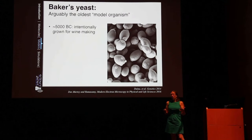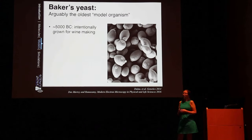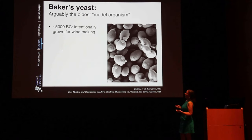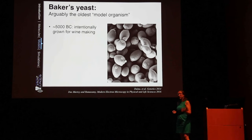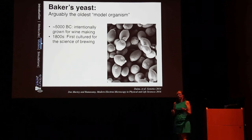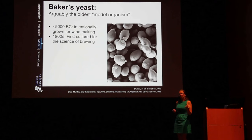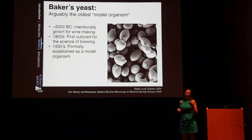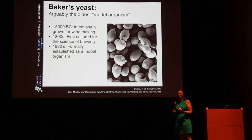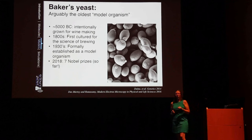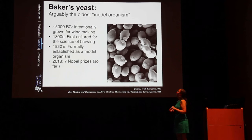Baker's yeast is usually considered the oldest model organism. Humans have been intentionally growing yeast for the purposes of making wine for literally thousands of years. In the 1800s, yeast was first used for scientific purposes as researchers tried to figure out what happens to grape juice as it turns into wine. In the 1930s, it was formally established as a model organism for understanding the biology of all organisms, including humans. As of now, seven different Nobel Prizes have been awarded for research performed in baker's yeast.